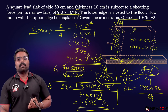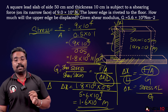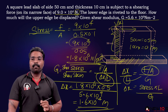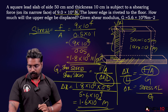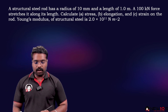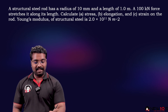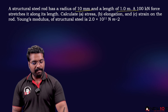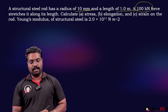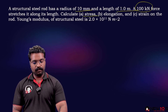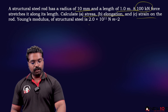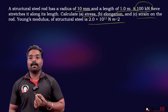These problems are very simple if you know the right equation. Last question: a structural steel rod has a radius of 10 mm and length of 1 m. A 100 kilonewton force stretches it along its length. Calculate the stress, elongation, and strain on the rod. Young's modulus is 2 × 10¹¹ N/m².